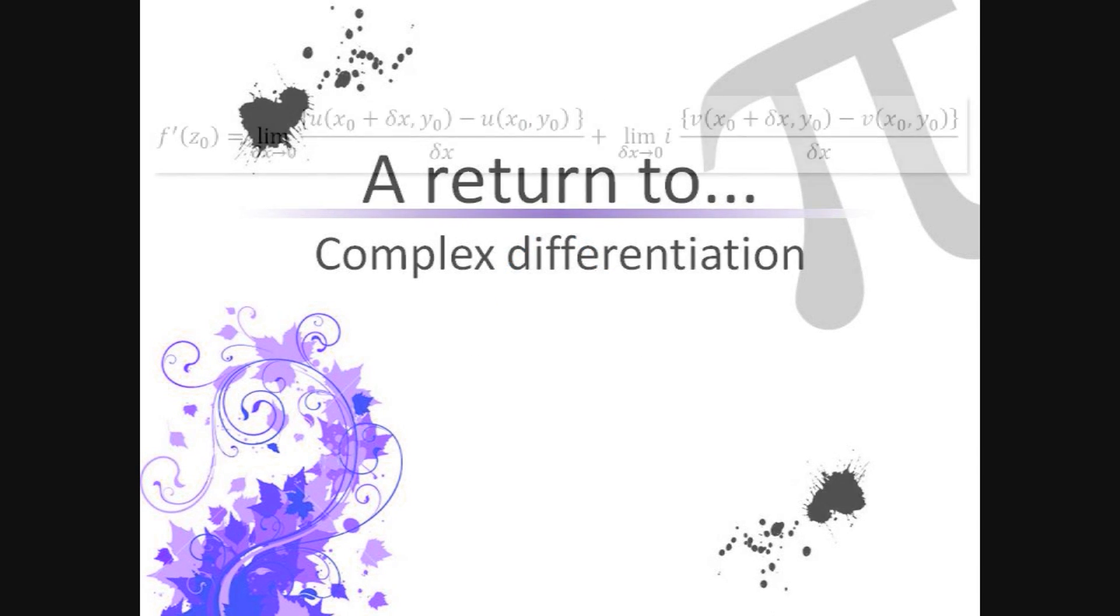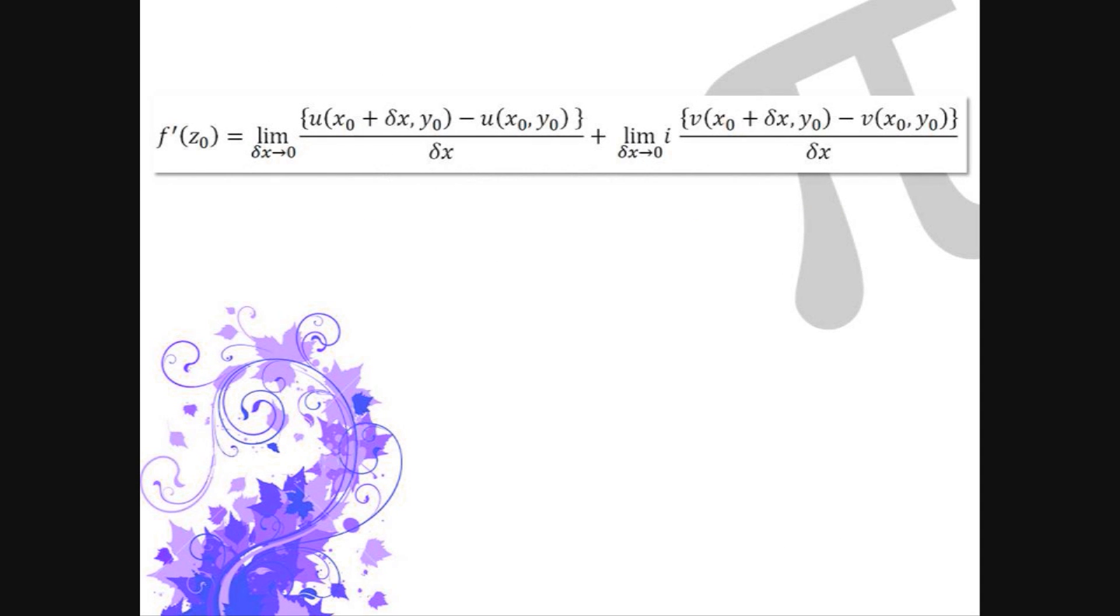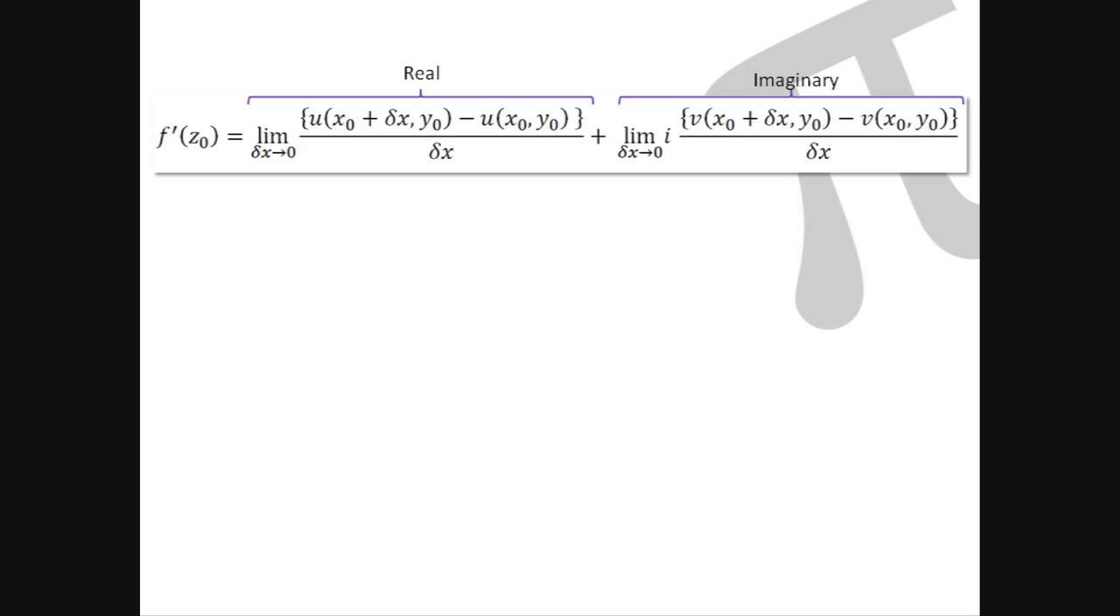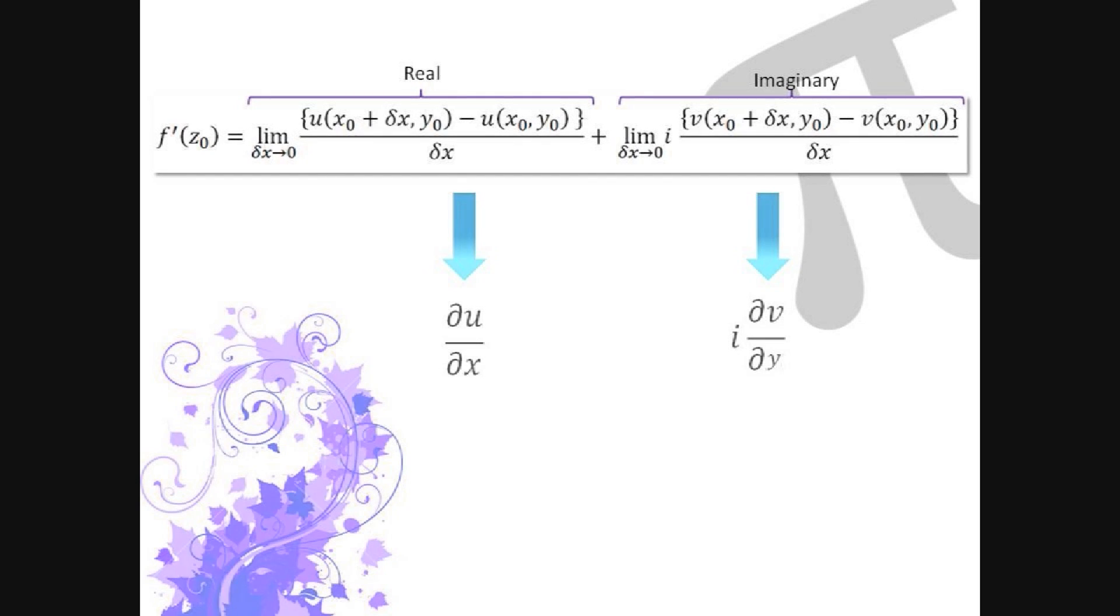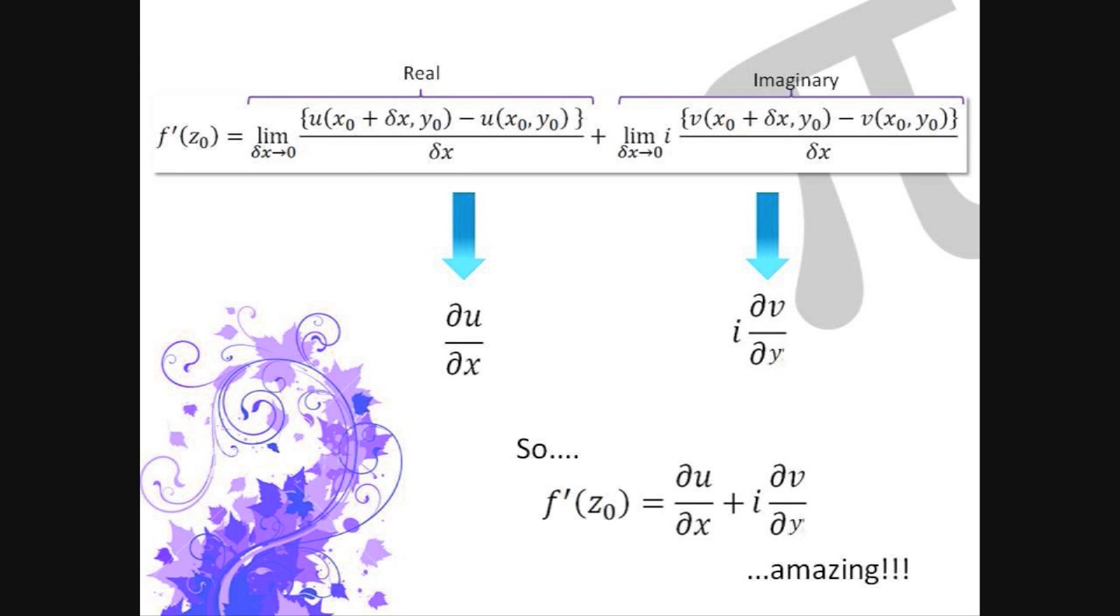A return to complex differentiation. Now that we have obtained a derivative of z in real and imaginary parts, we can divide it into the two parts, real and imaginary, u and v, as shown. Looking at these parts, it can be seen that the first is a partial differential of u with respect to x and the second is a partial differential of v with respect to y where the whole second partial derivative is imaginary. So we now have f dash of z in terms of two partial differentials, one real and the other imaginary.